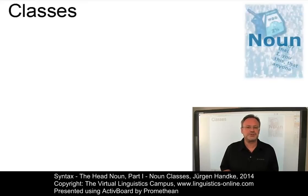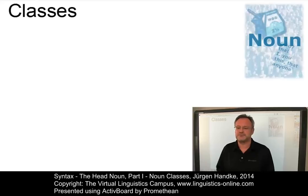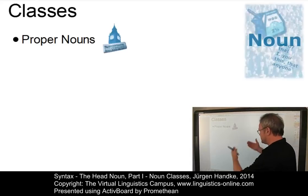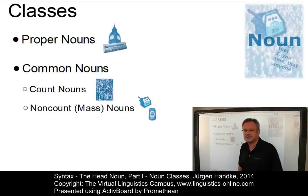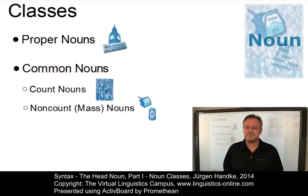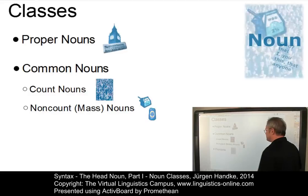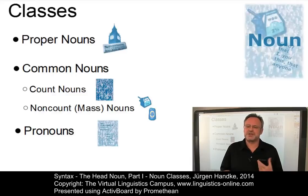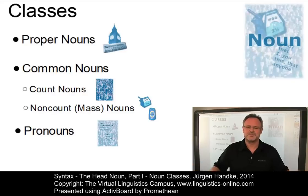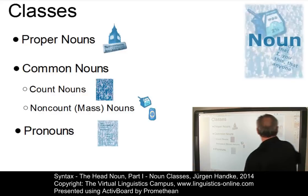Using grammatical criteria, two general subclasses of nouns can be defined: proper nouns, which are basically names, and common nouns, which in turn can be subdivided into count nouns and non-count or mass nouns. The open class of nouns is supplemented by the closed class of pronouns, which can deputize for entire noun phrases. These three noun classes can be kept apart on the basis of a number of formal criteria. Let's look at them and start with proper nouns.